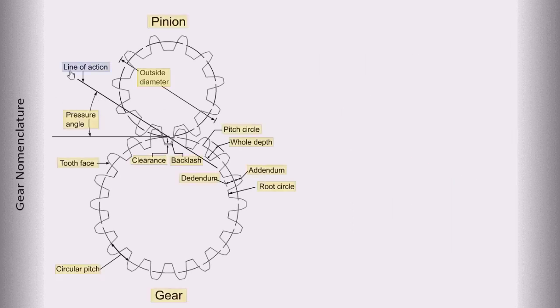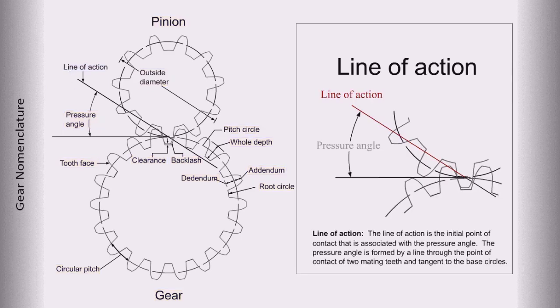Line of action. The line of action is the initial point of contact that is associated with the pressure angle. The pressure angle is formed by a line through the point of contact of two mating teeth and tangent to the base circles.